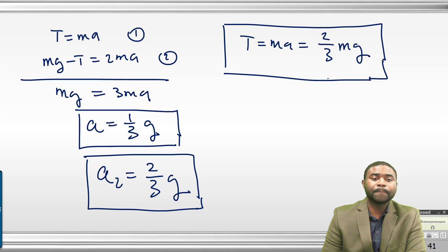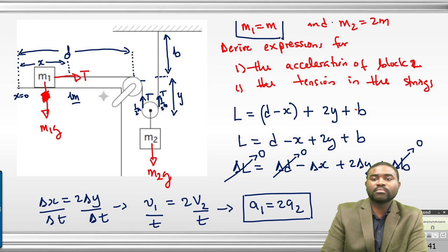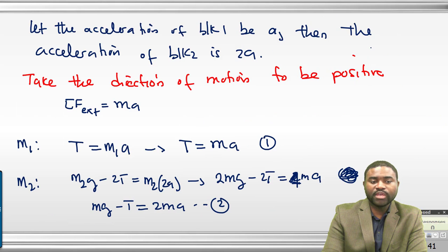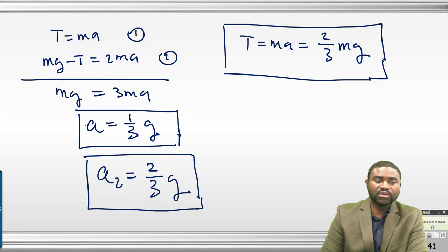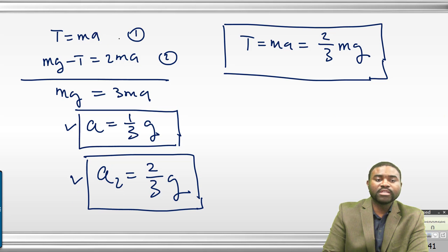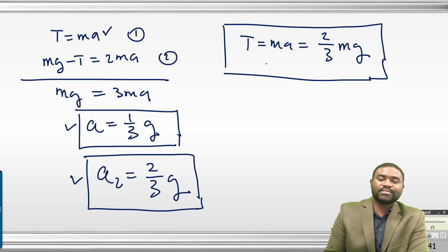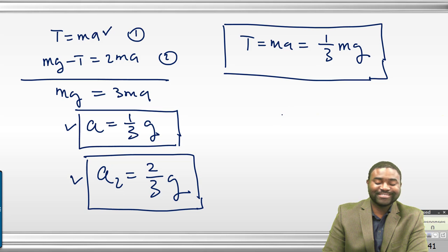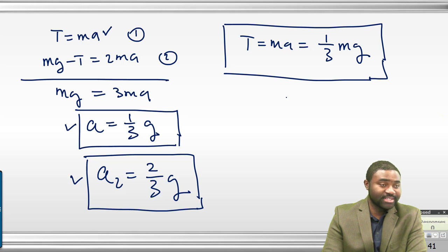A student asks a question and the instructor confirms: M1 is M and M2 is 2M, so T equals M1·A equals M·(G/3) equals MG/3. The instructor acknowledges the student's correction warmly: 'You are correct — that's why I love this class, you guys pay attention.'